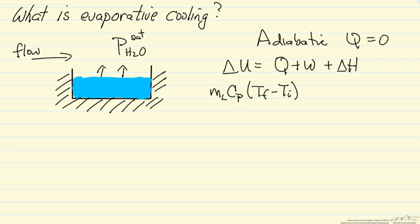So this is the energy change as we're evaporating. Adiabatic, so Q is zero, W is zero, and delta H is removing energy, minus delta H of vaporization.